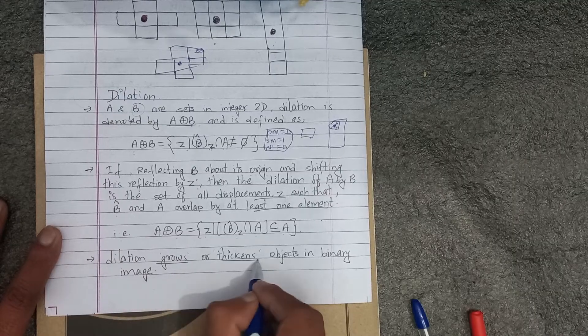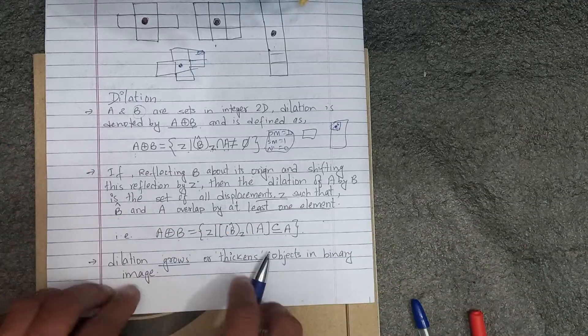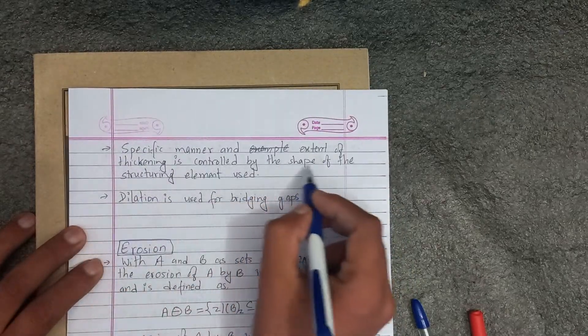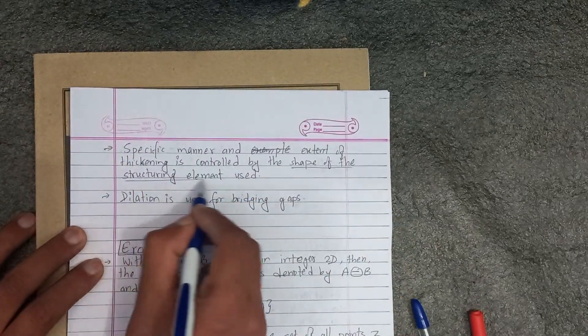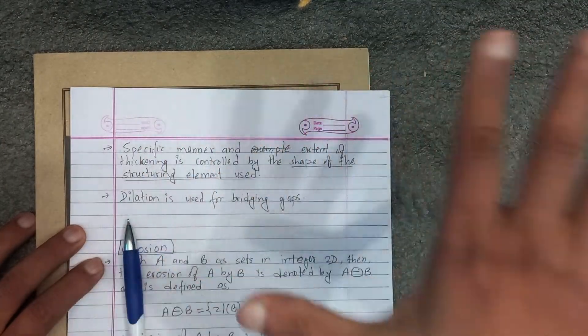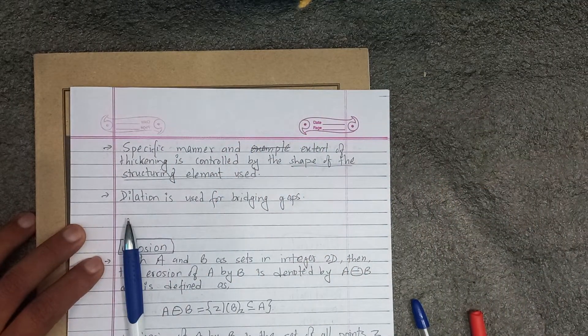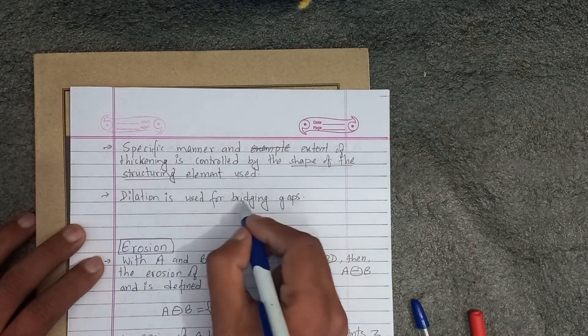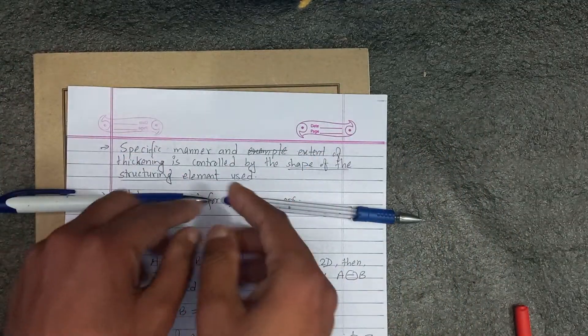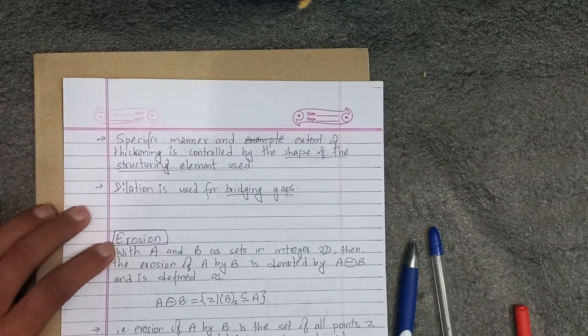Dilation is the growth or thickening of objects in binary image. Dilation is the growth. The specific manner and extent of thickening is controlled by the shape of the structuring element used. It can be made in the extent. Dilation is used for bridging gaps. There is a gap that is used in the same size.